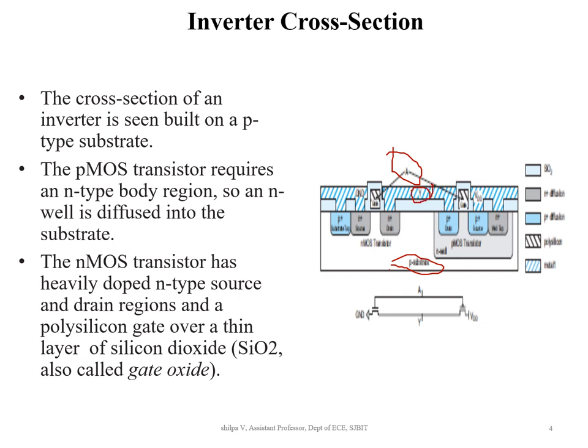The substrate must be tied to a low potential to avoid forward biasing the p-n junction. Similarly, the n-well must be tied to high potential. This is done by adding heavily doped substrate and well contacts connected to ground and VDD respectively.